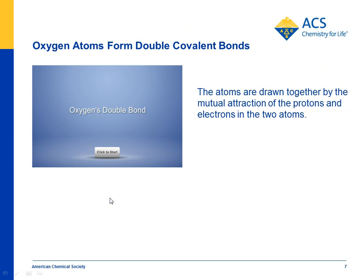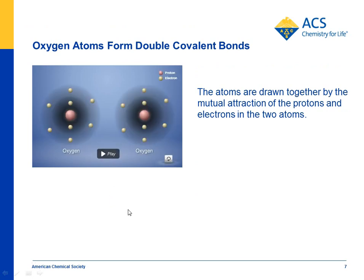Also, if you want to, you can show students that there's something called a double covalent bond. When oxygen bonds with another oxygen atom, it makes O₂. And it's not just one electron from each atom that's shared, but two.